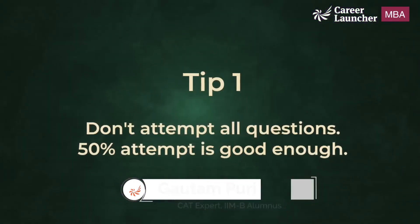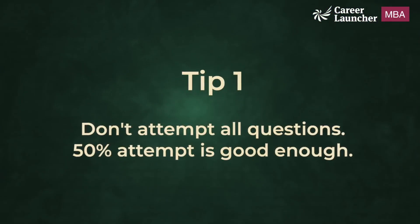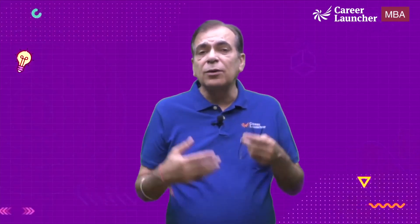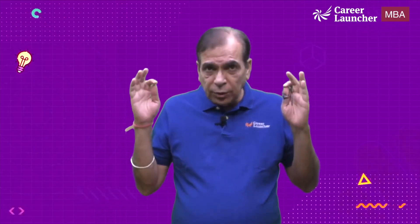Let us look at the five things you should do in the paper to ensure that you get a good score in quant. The first thing you should remember is we have 40 minutes and 12 to 13 questions. Approximately 40 marks are good enough for 99th percentile and 30 marks are typically good enough for 90th percentile. Please remember 50 percent attempt is a very good attempt — you don't have to attempt all the questions, as time is not sufficient to do all 22 odd questions.